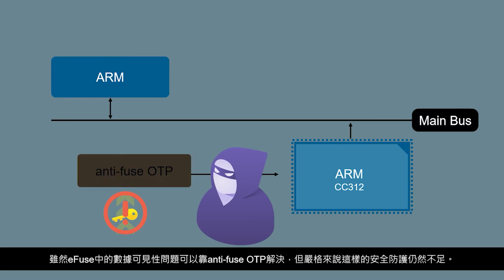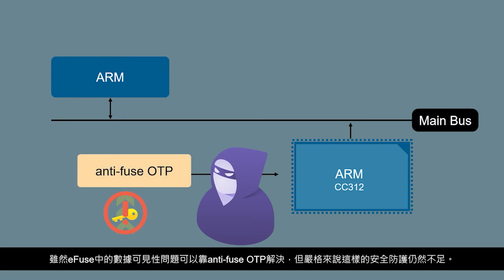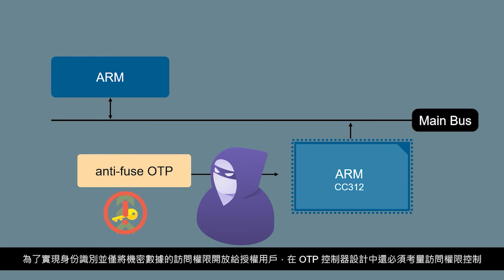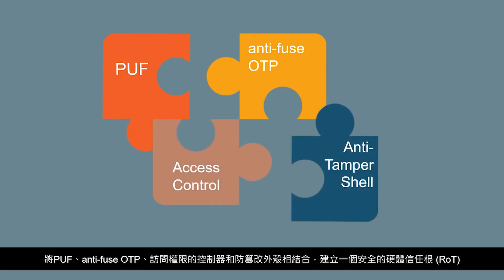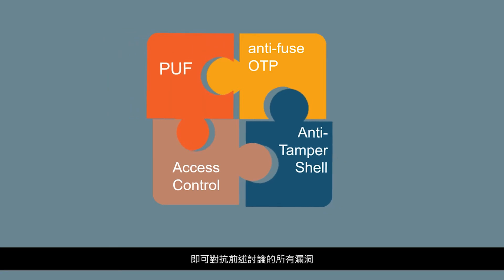While the data visibility problem in eFuse can be easily solved by using anti-fuse OTP, it is still insufficient when it comes to security. Access privilege control must also be considered in the OTP controller design to enable identity differentiation and grant access to secret data for authorized users only. Combining PUF with anti-fuse OTP, a controller with access privilege, and an anti-tampered shell establishes a secure hardware root of trust, countering all the vulnerabilities mentioned before.